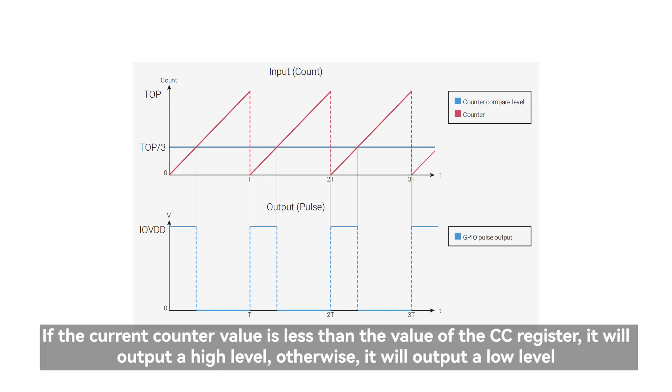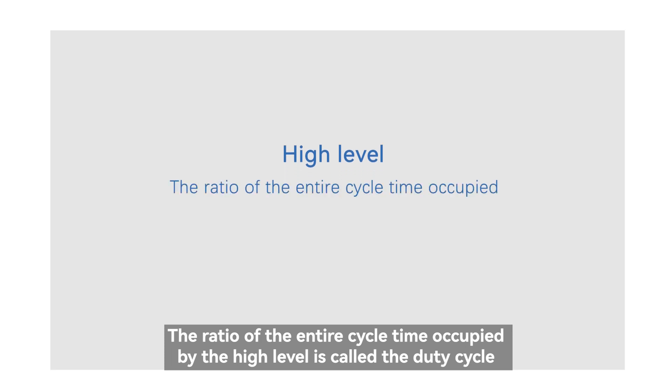If the current counter value is less than the value of the CC register, it will output a high level, otherwise, it will output a low level. The ratio of the entire cycle time occupied by the high level is called the duty cycle.